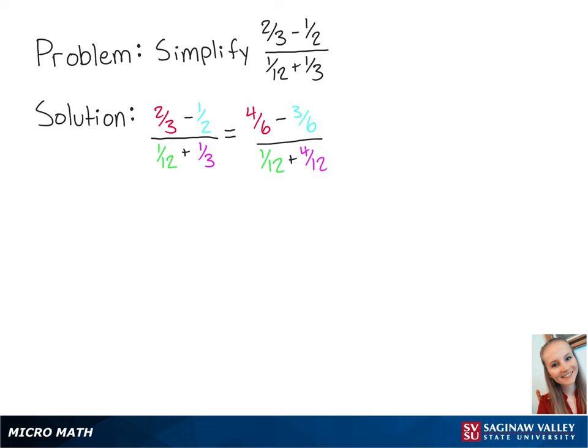4 sixths minus 3 sixths is equal to 1 sixth, and 1 twelfth plus 4 twelfths is equal to 5 twelfths.